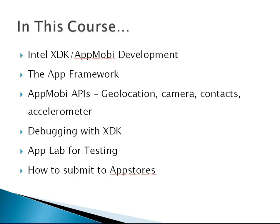We'll then move on to Intel XDK, which is also known as AppMobi. Intel XDK is a tool that we can use to write HTML5 applications that will run in a native container on any platform. We'll learn about the app framework, which is a mobile framework similar to jQuery Mobile, and we'll also work with some of the APIs that we covered in the PhoneGap section: geolocation, camera, contacts, and accelerometer.